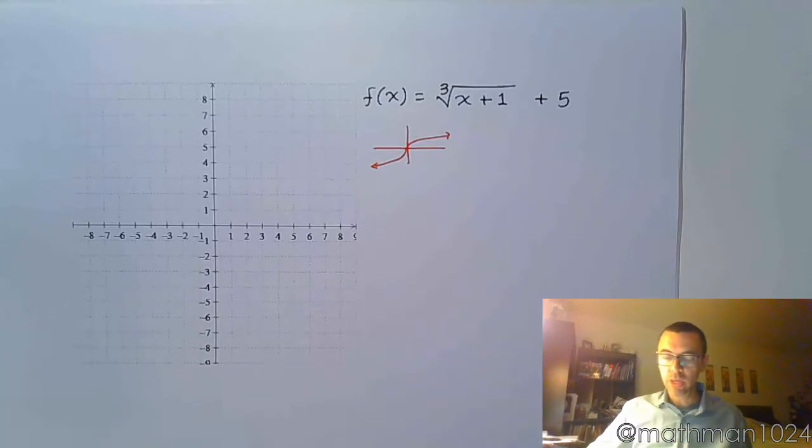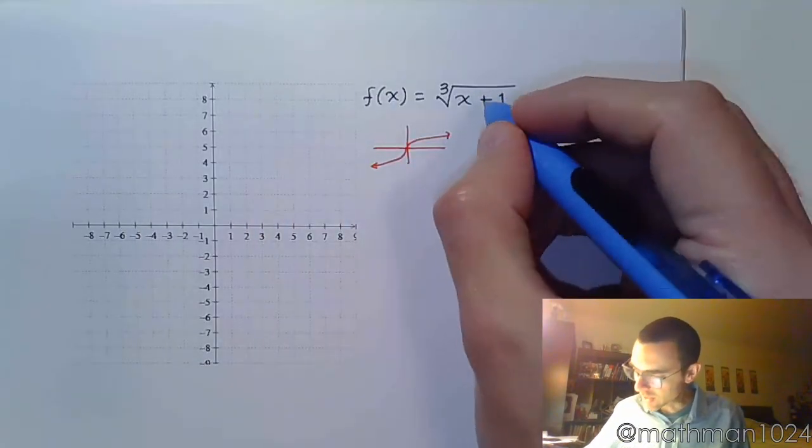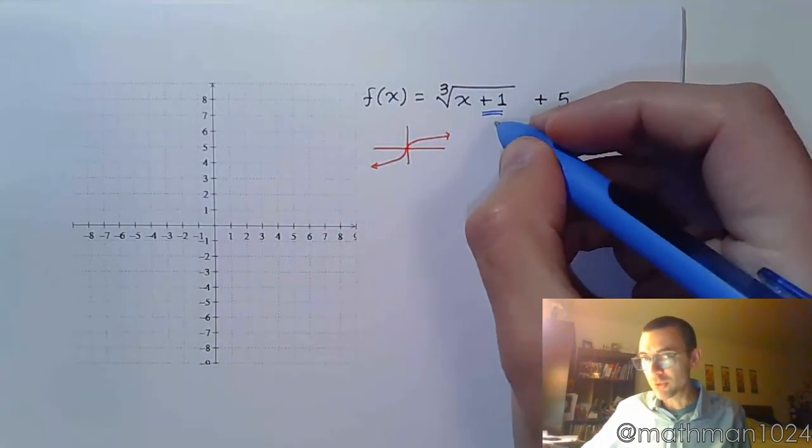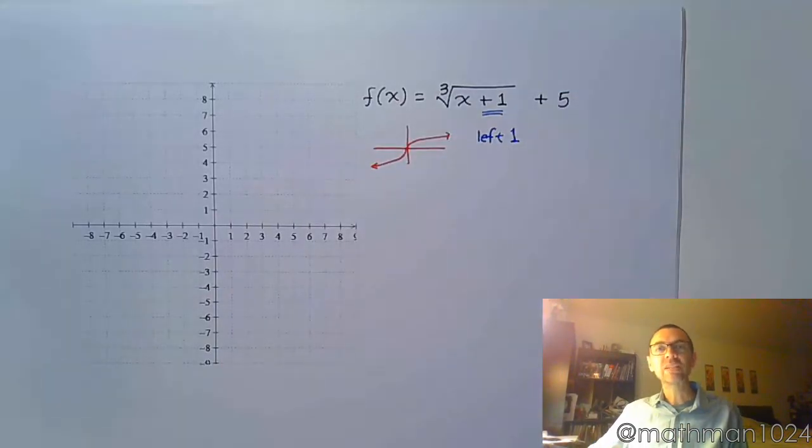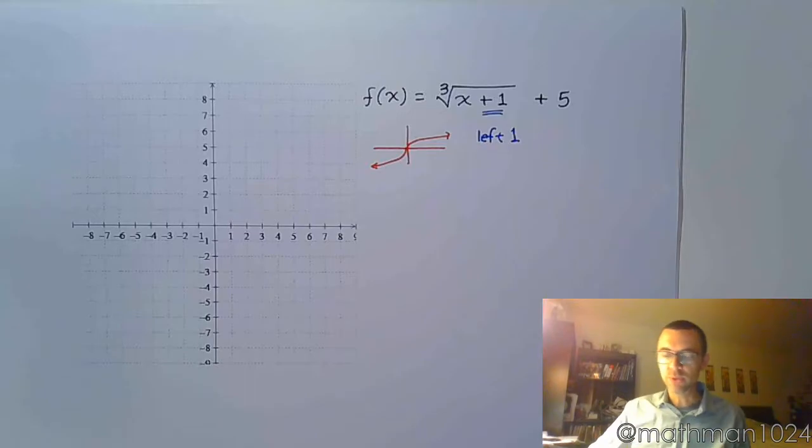Okay, so what am I doing with this? Well, we always look to see what's inside the function. Inside I see plus 1. I'm going to do the opposite of that, which means I'm going to go to the left 1 unit. Inside, horizontal, opposite of what you see.